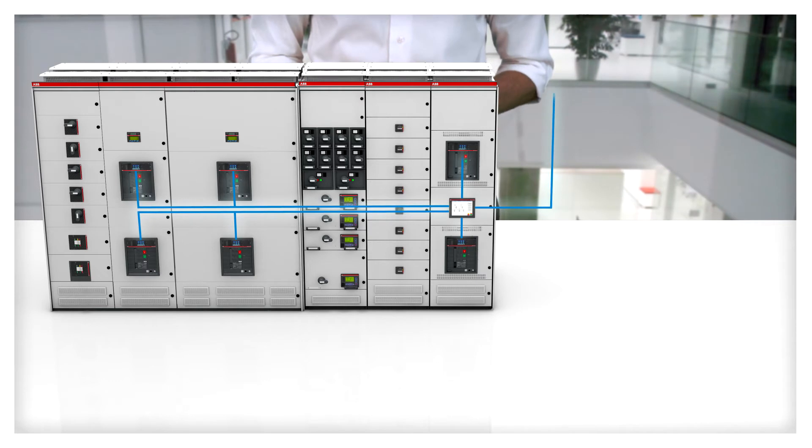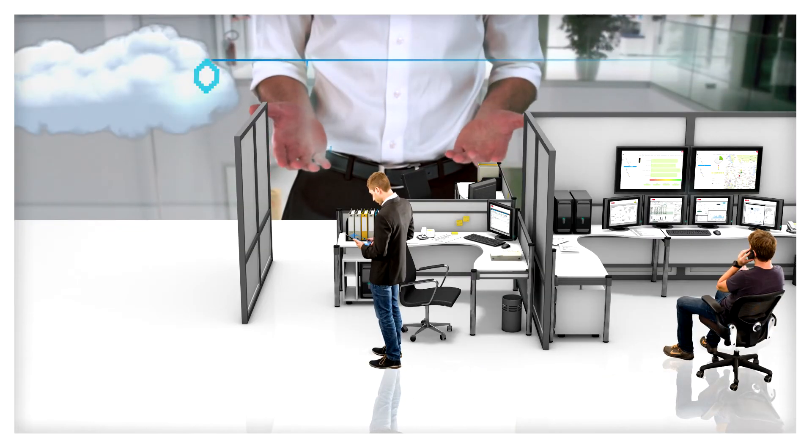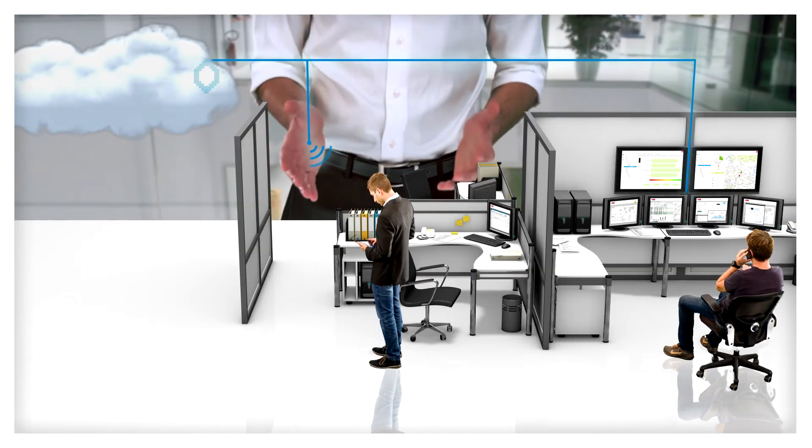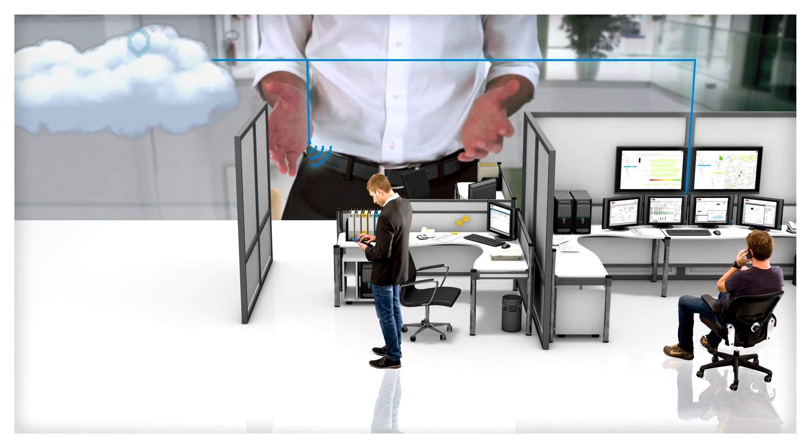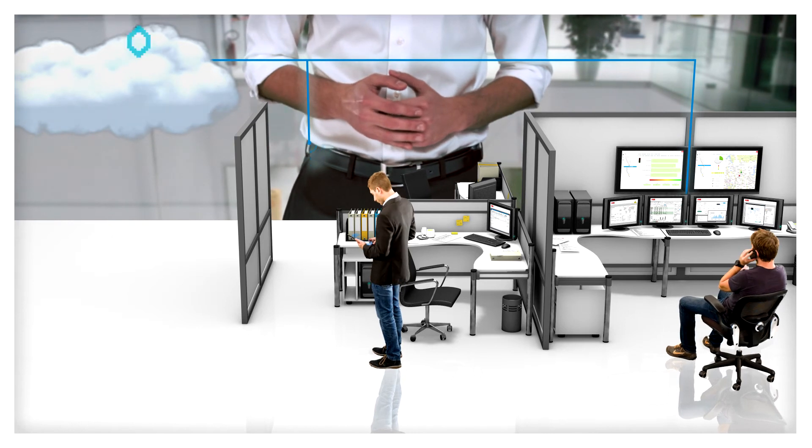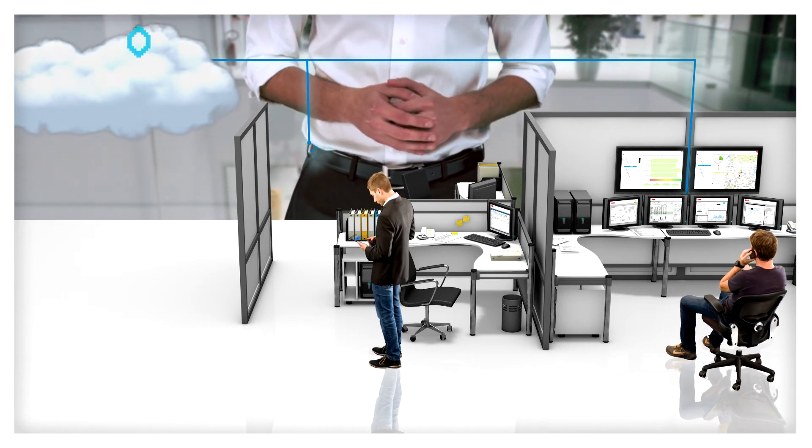Customers can also receive warnings about imminent failures by connecting to the ABB MyRemoteCare server. The system collects key performance data and processes it using ABB's proprietary algorithms to determine risk levels. The service sends out a warning in case of emergency, but you can also access MyRemoteCare for data analysis with just a simple internet connection.